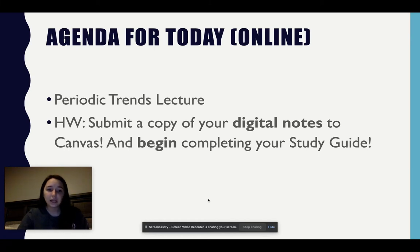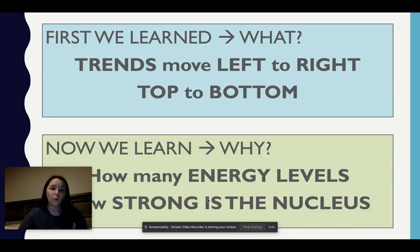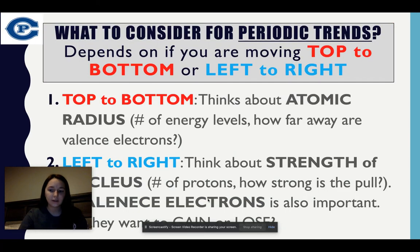So let's begin. First we learned that trends move left to right and top to bottom. We did this a lot in the Periodic Trends Lab, and I'm hoping you have a very strong understanding of this. Now what we're going to go into is the what and why — how many energy levels and how strong is the nucleus in these trends, considering atomic radius and the strength of the nucleus.